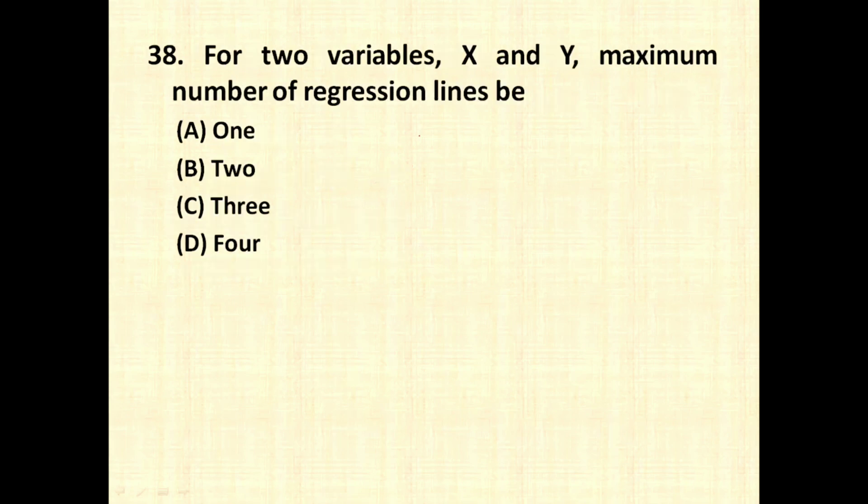For two variables X and Y, maximum number of regression lines will be. So whenever there are two variables, the maximum number of regression lines will be 2. That is in this case, X on Y is one regression line and Y on X is another regression line. So option B, 2 is the correct answer for this question.